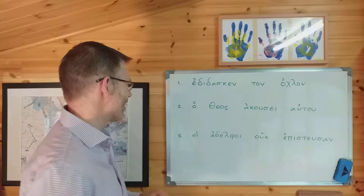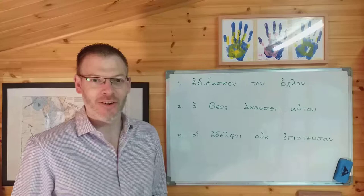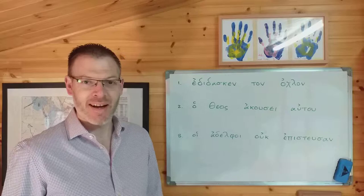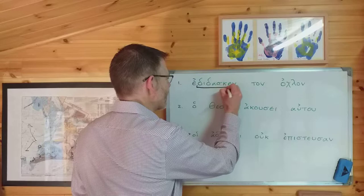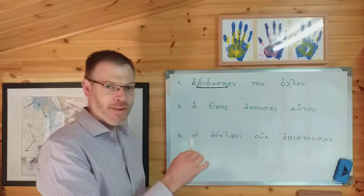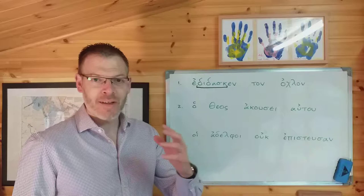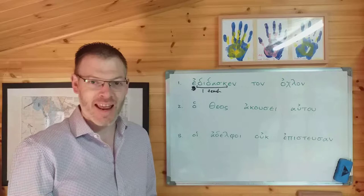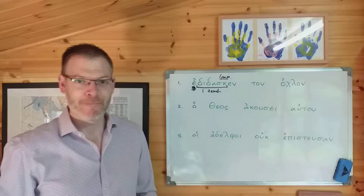Edidasken ton ochlon. First thing you need to do: find the verb. The verb is edidasken, which comes from didasko, meaning 'I teach.' So let's highlight the stem first: didask is the stem. The next thing you want to look for is the epsilon augment and sigma suffix. Epsilon augment? Yes. Sigma suffix? No. That tells you the tense — it's imperfect. So it's happening in the past, extended in time in some way.